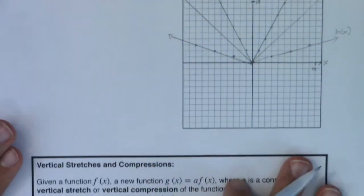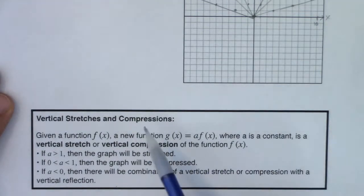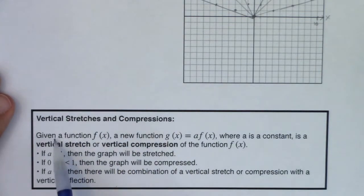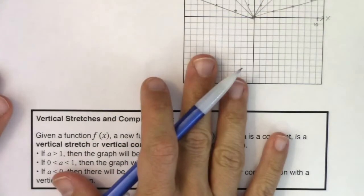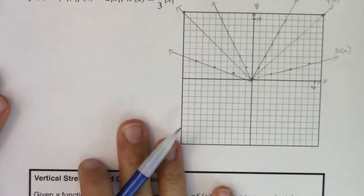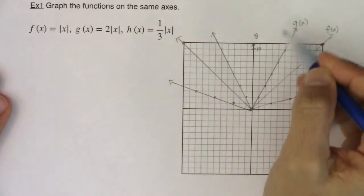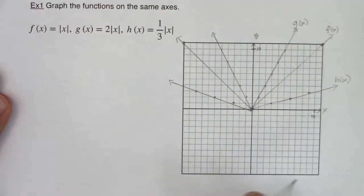Alright, so I want to scooch up here so that we can see this box. And let's talk about what our takeaways are. So vertical stretches and compression. So given a function f of x, a new function, g, defined as a multiple of f of x, where a is some constant, is a vertical stretch or a vertical compression of the function f of x. Now if a is greater than 1, then the graph will be stretched. And we saw that. When we doubled our y values, when we were taking a look, when we doubled our y values here, we saw that this got stretched vertically, right? It got stretched up.